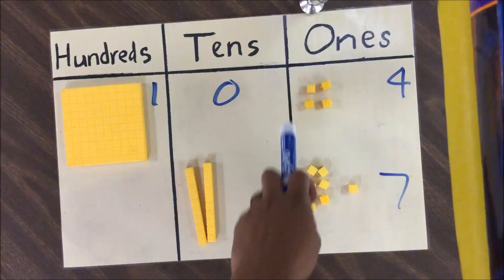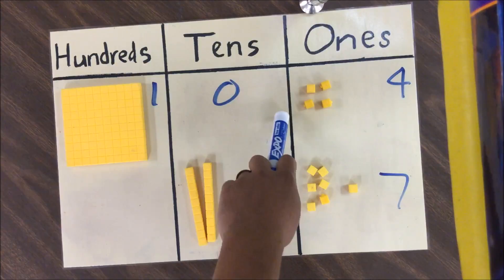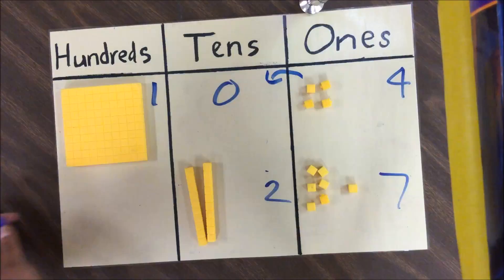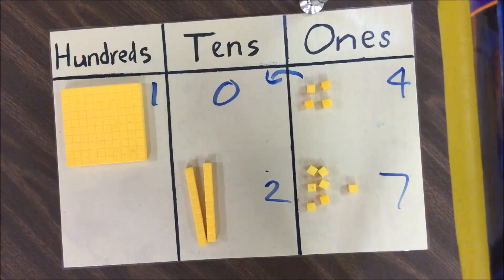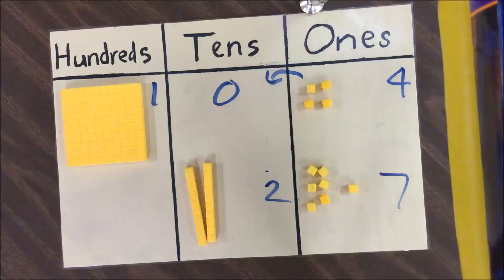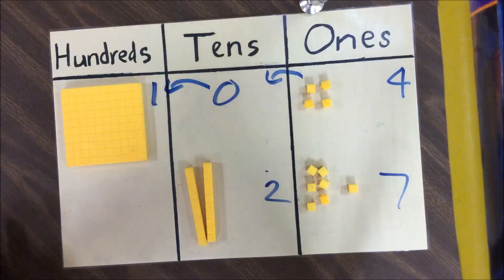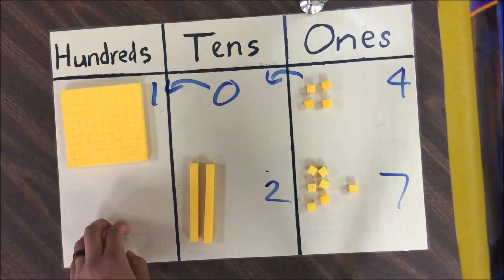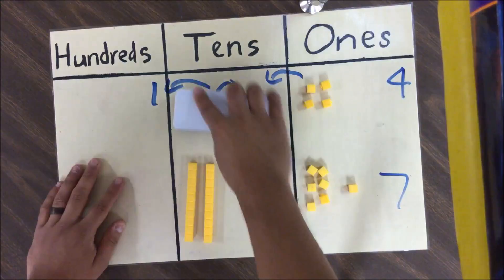Now let's start our subtraction. Starting in the ones place, we see we have 4 on top and 7 on the bottom, and it would be impossible to subtract 7 from 4 without getting a negative number. So we need to borrow from our neighbor in the tens place. But we see zero in the tens place — there's nothing to take from there. So we have to look to our next neighbor and borrow the one from the hundreds place, decomposing it just like we did before.